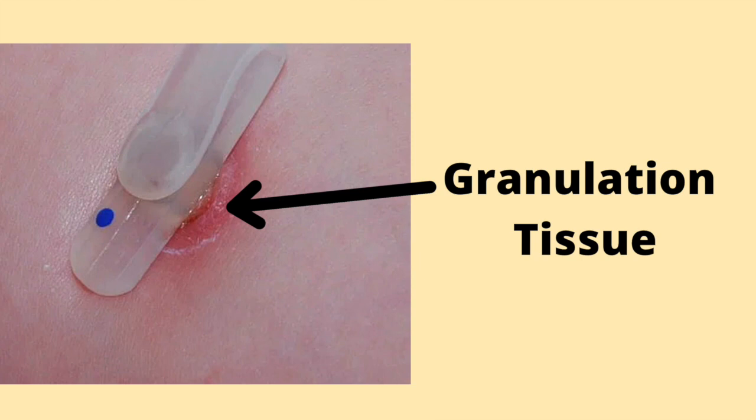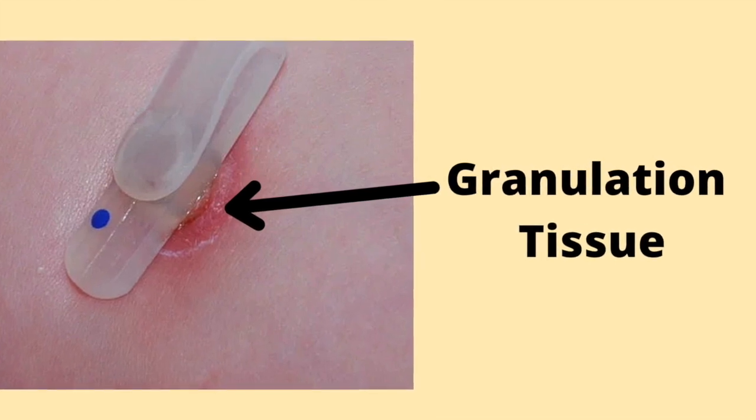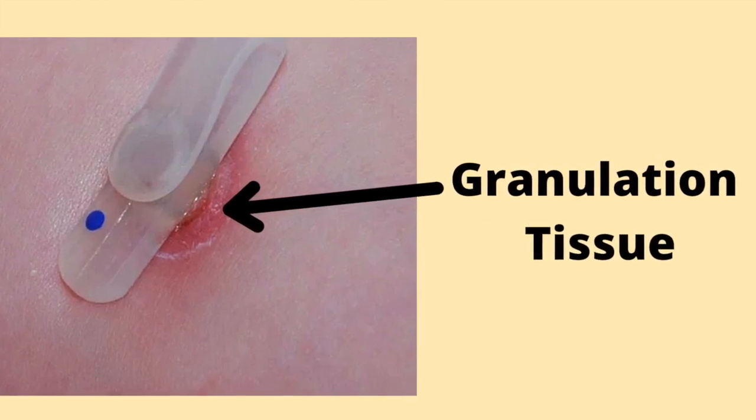People who have permanent catheters and ports implanted may develop granulation tissue around the site of the implant. This is especially common if the implant is not properly fitted. If the indwelling device moves around, the flesh is continually re-injured and thus it produces granulation tissue to repair itself. It is important to maintain catheters, ports, and implants with care to avoid the development of granulation tissue.